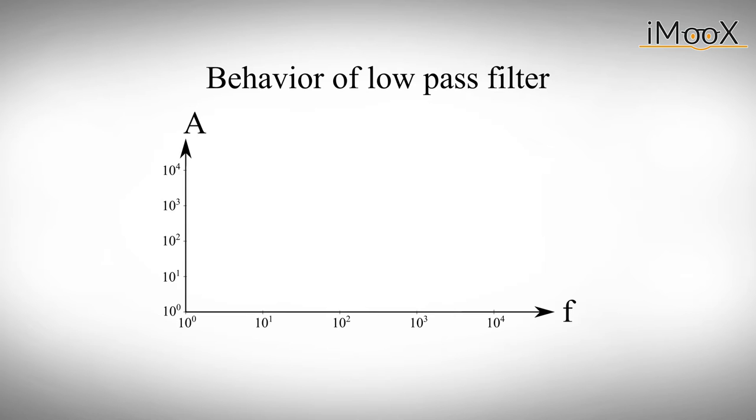A perfect low pass filter signal would look like this. For low frequencies, the signal passes through unaffected until the so-called corner frequency FC is reached. Everything above this corner frequency is being blocked by the low pass filter, so the amplitude becomes zero.